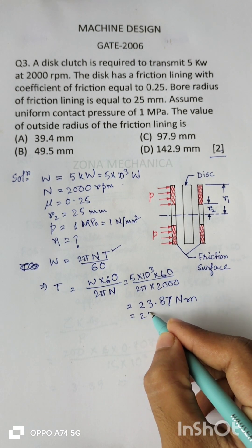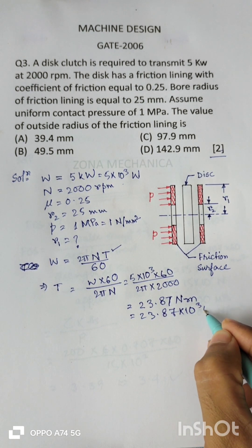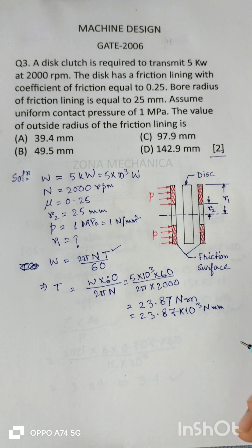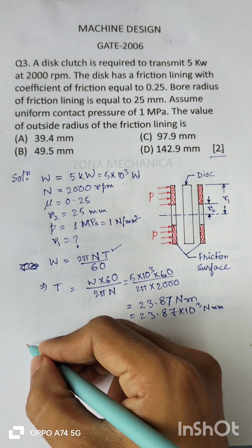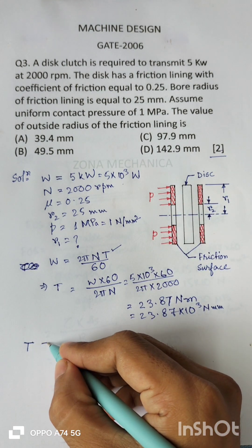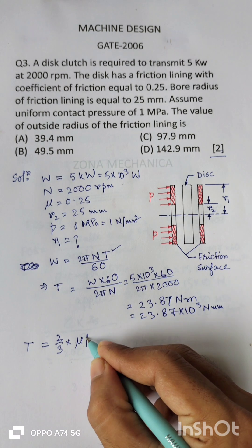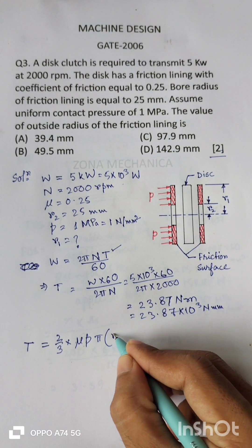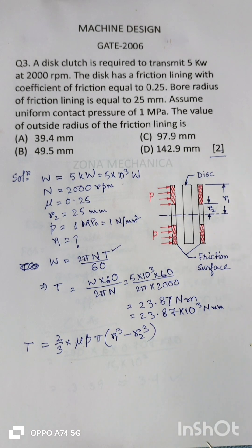So that is 23.87 into 10 to the power 3 newton millimeters. Now we know the expression for this torque from the configuration is 2/3 μ into P into π into (R1 cube minus R2 cube). This is the expression for T.